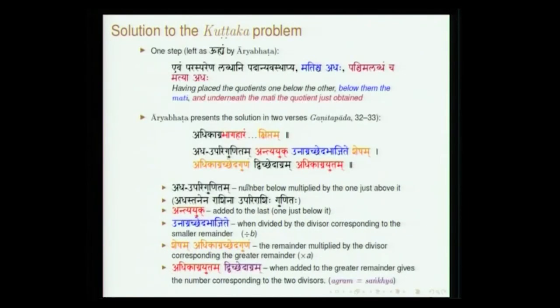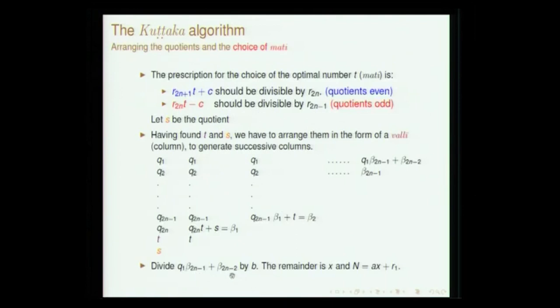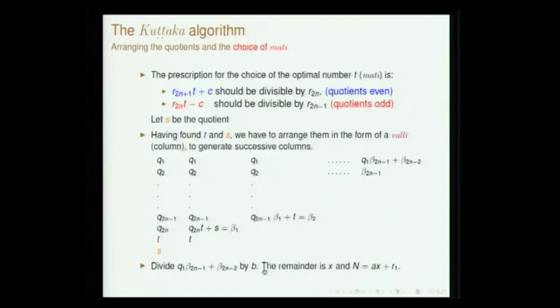At that stage you stop the multiplication and creating the walli. Once you do that, the final result has to be divided by b — the remainder whatever you get is basically x. We want to find x: after reaching these two numbers, you take the last number, multiply by b, divide, and the remainder you get is your x.